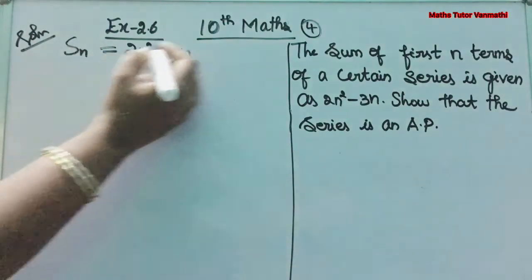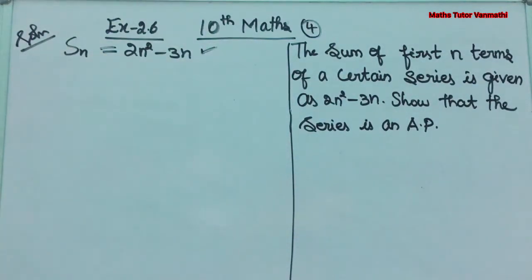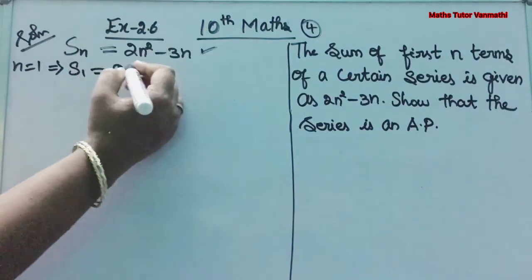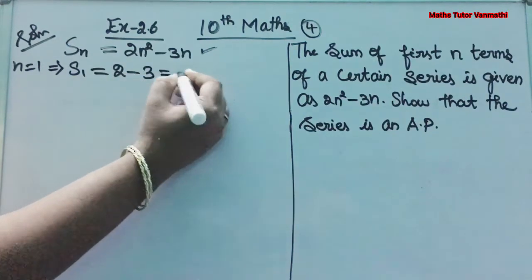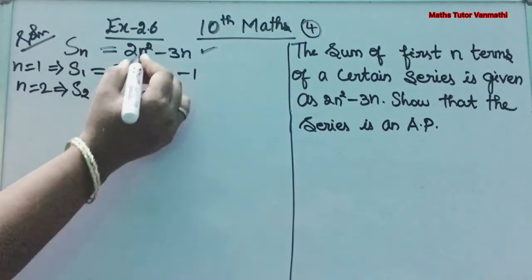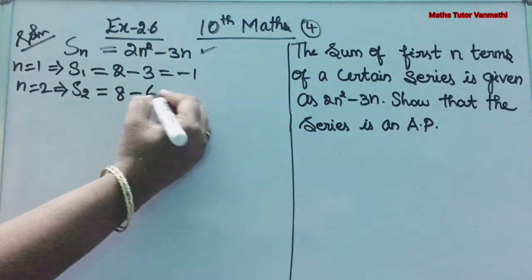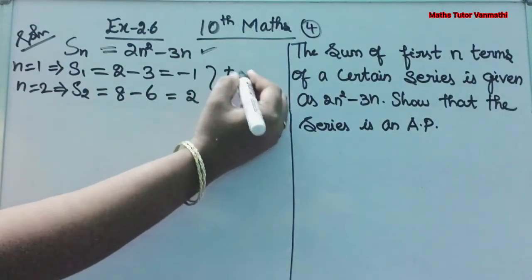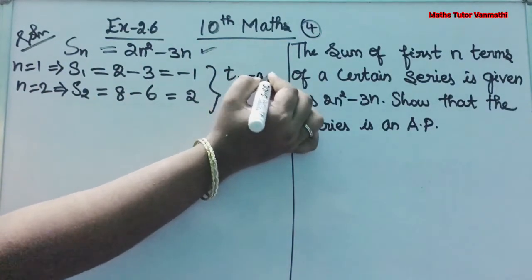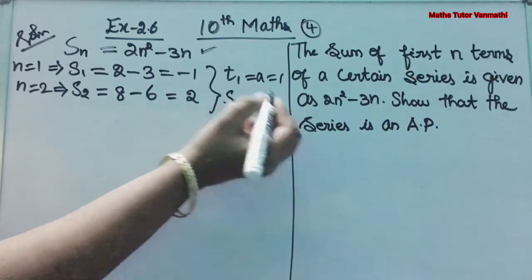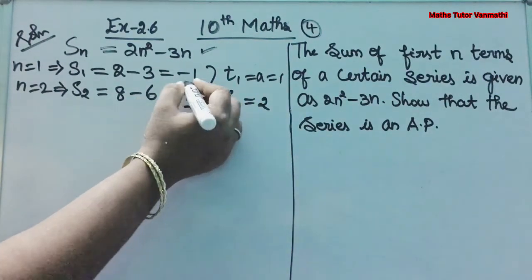Substituting N = 1: S1 = 2(1)² − 3(1) = 2 − 3 = −1. Substituting N = 2: S2 = 2(2²) − 3(2) = 8 − 6 = 2. From this, T1 = S1 = −1. To find T2, we use T1 + T2 = S2, so T2 = S2 − T1.